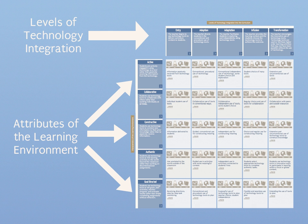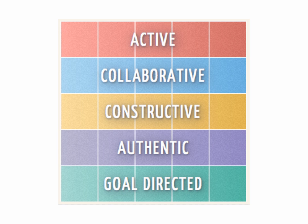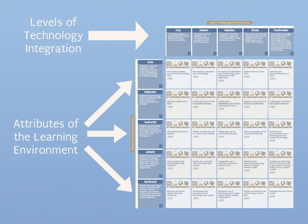Those five attributes are active, collaborative, constructive, authentic, and goal-directed learning and teaching. These are based on a variety of different studies, prominently including the work of David Jonassen. On the TIM website, mytechmatrix.org, you can get more information about each of these characteristics and how each changes across the levels of technology integration. The website has detailed descriptions within each cell of the matrix covering what typical teacher behavior looks like, what typical student behavior looks like, and the details of what the learning environment supports inside each of those 25 cells.